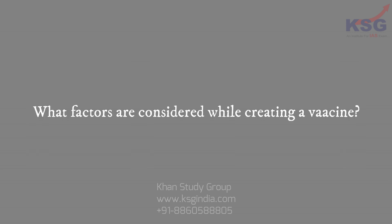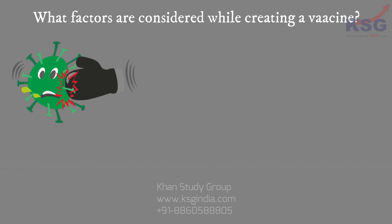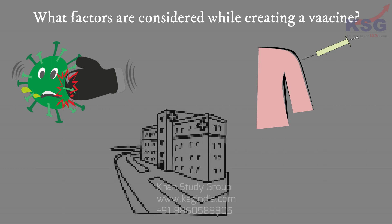What factors are considered while creating a vaccine? First, how our immune system responds to the germ. Second, who needs to be vaccinated against the germ. Third, the best technology or approach to create the vaccine.